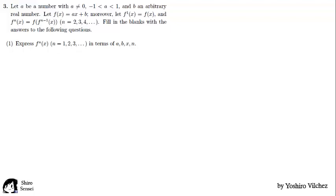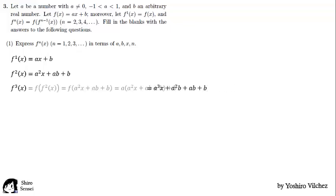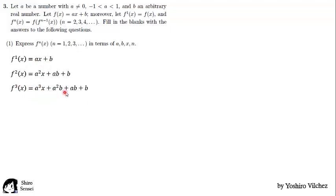In order to solve this problem we use induction. For n equal to 1, f of x is ax plus b. For n equal to 2, it is f of f of x; replacing and evaluating we get the result. For n equal to 3, it is f of f2 of x; doing the same process we get the result. As we see there is a pattern: for n equal to 1 the highest power of a is 1, for n equal to 2 it is 2, and for n equal to 3 it is 3, corresponding to the linear term. And in the independent term, the powers of a decrease by 1 until reaching 0. So for fn of x we get this expression.